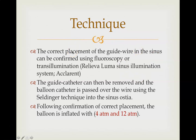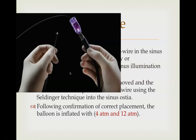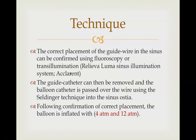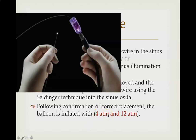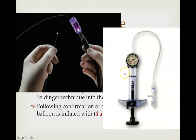Confirmation is performed using fluoroscopy or trans-illumination. The most commonly used system is the Relieva Luma sinus illumination system by Acclarent. The guide catheter is then removed and the balloon catheter is passed over the wire using Seldinger's technique into the sinus ostia. Following confirmation of correct placement, the balloon is inflated with 4 to 12 atmospheric pressure. If asked in an exam, you should say 4 to 12 atmospheric pressure.